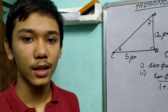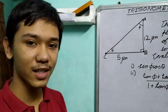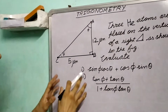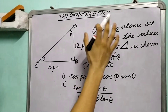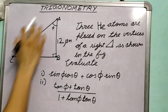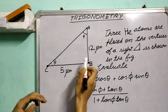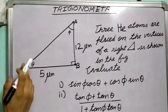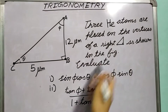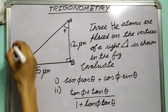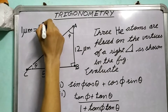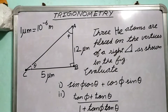Welcome. In this video we are going to solve another example — a very interesting example I framed myself. Three helium atoms are placed on the vertices of a right triangle as shown in the figure. We have a right triangle ABC where angle A is φ, angle C is θ, and AB has a value of 12 micrometers. One micrometer is 10 to the power of minus 6 meters, so it's a very small value.